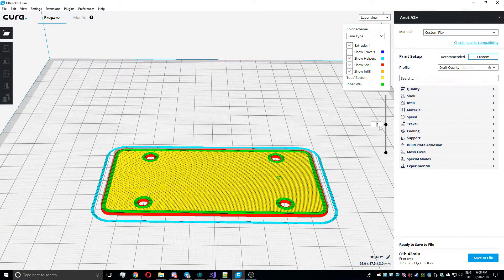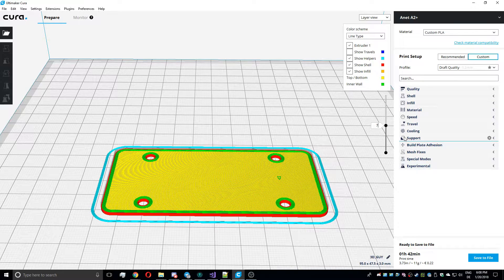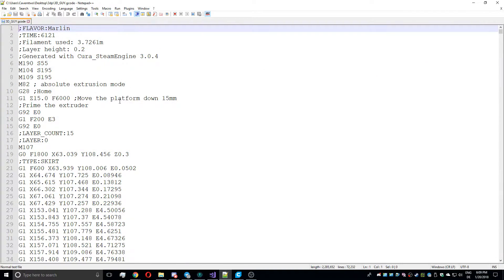Oh, and something important. While the layer view in Cura displays layers starting with one, in the G-code they start with zero, so take care about that.